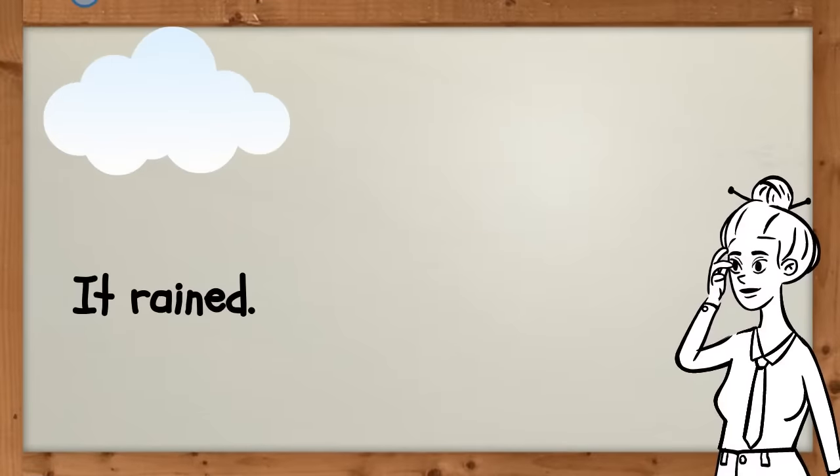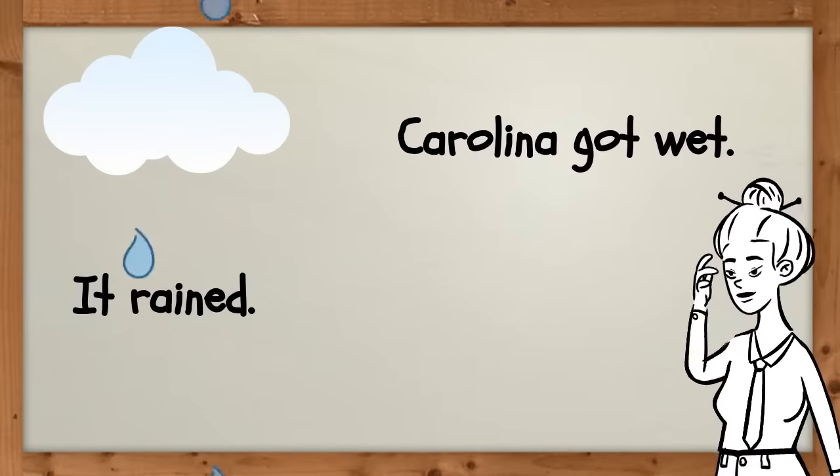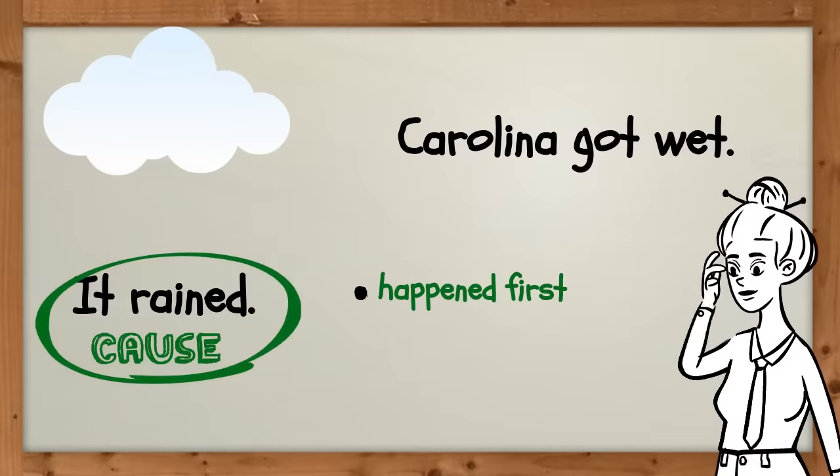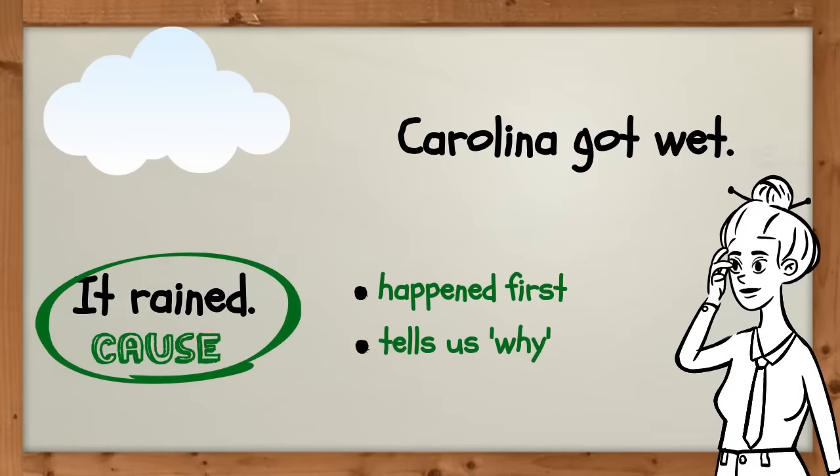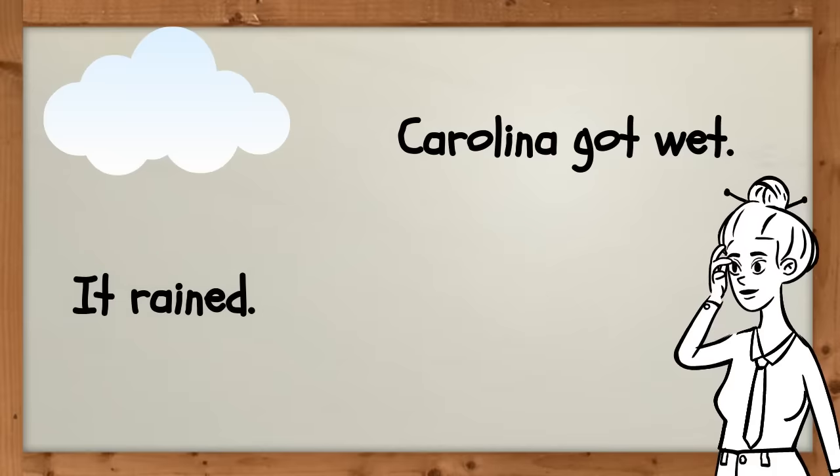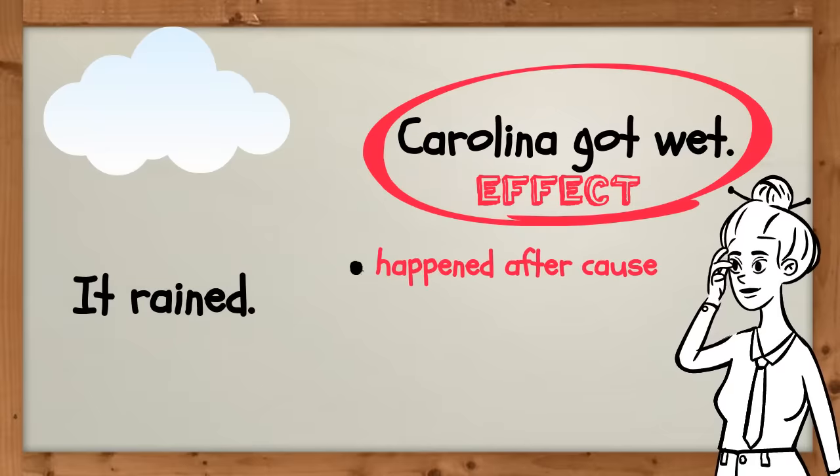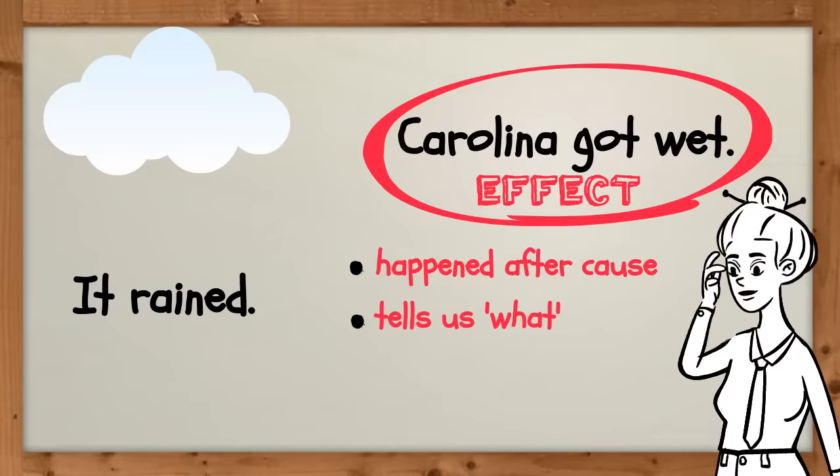It rained. Carolina got wet. It raining is the cause because it must have occurred first and because it tells us why Carolina got wet. Carolina getting wet is the effect because it had to have happened after the cause and it tells us what happened.